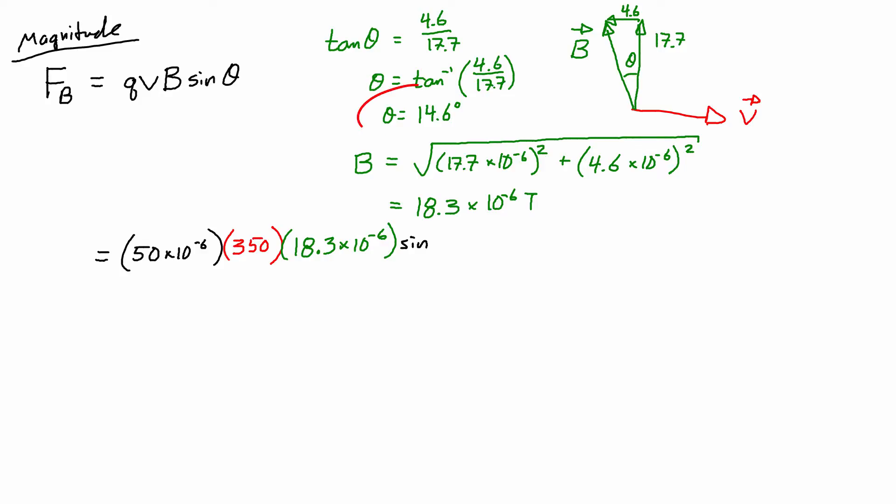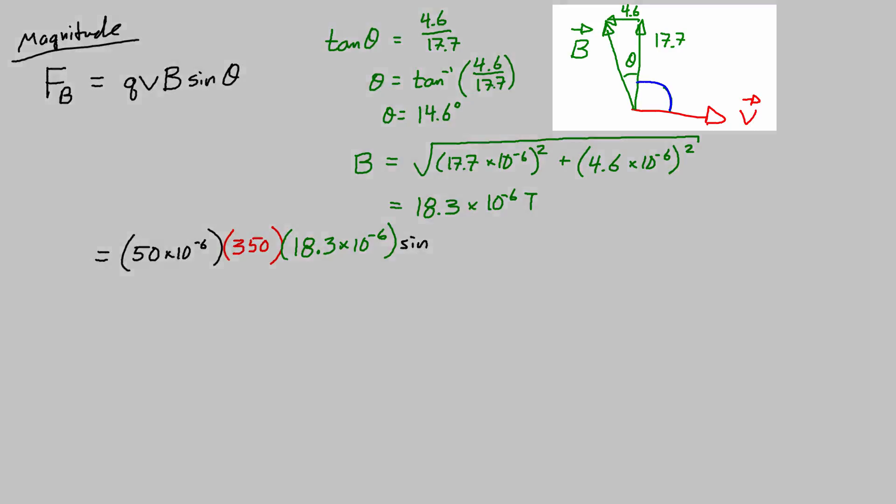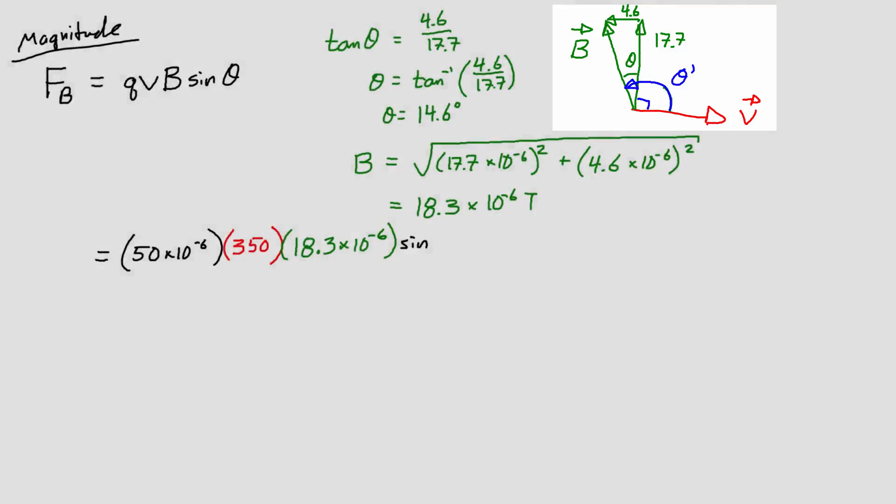I've seen many students at this point say well we just calculated theta was 14.6, but the angle that fits into this equation is actually the entire angle. Maybe I'll call it theta prime between v and B. So I need to actually consider that there's 90 degrees already between east and north and then add 14.6, and 90 plus 14.6 gives me 104.6 degrees. When I solve for that then I get 3.1 times 10 to the negative 7 newtons.